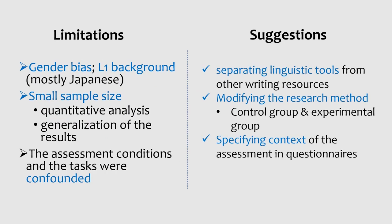This part is about the limitations and suggestions for future studies. As for the limitations, the first point is the gender bias of the participants and their unbalanced L1 background. Most of them were female and more than half of the participants' L1 is Japanese, which would possibly influence the interpretation of the results. Besides, the small sample size can cause some limitations in running the quantitative analysis and generalizing the results.